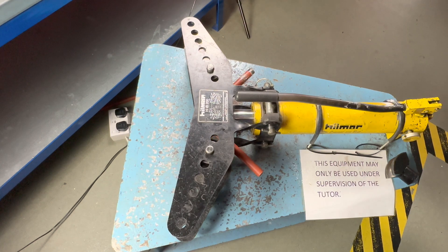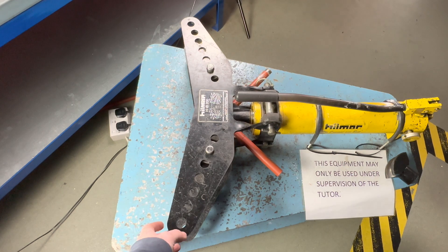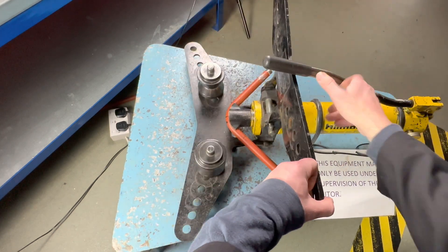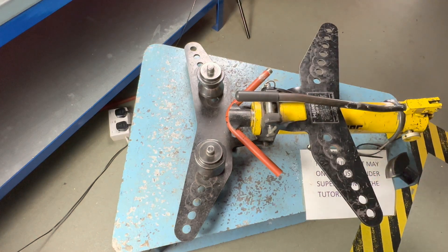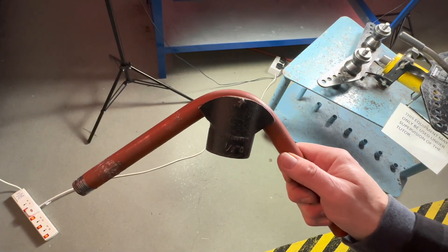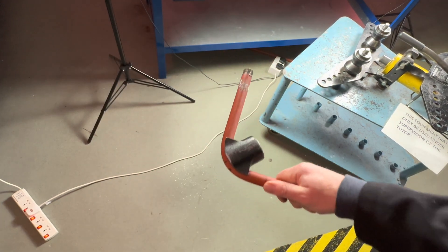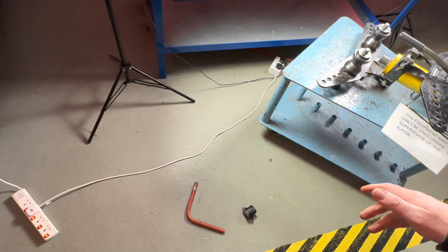Once we've bent the pipe, we then release the mechanism, lift up the lid. Top tip: if the pipe gets stuck in the former, if you just drop it, it comes out.